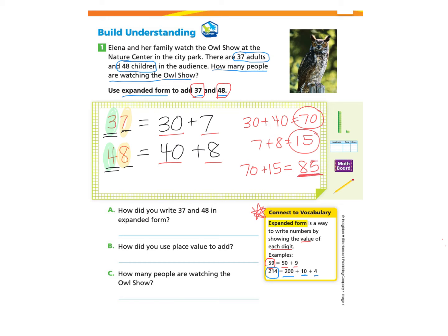So part A asks, how did you write 37 and 48 in expanded form? And so we can go back to where we were working and we can write this out. 37 equals 30 plus 7 and 48 equaled 40 plus 8.